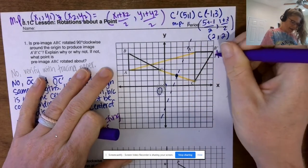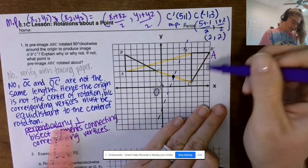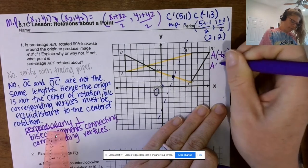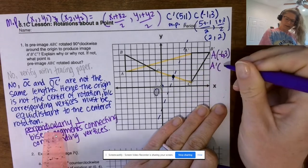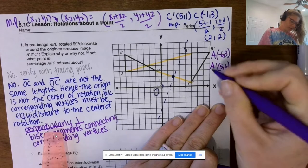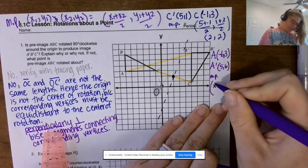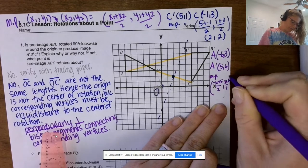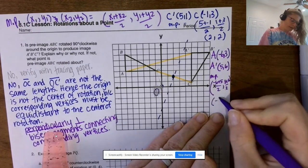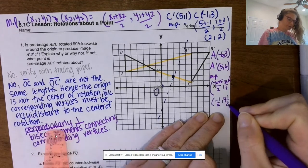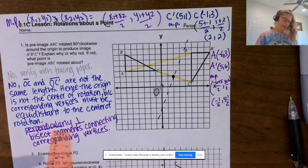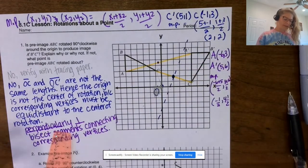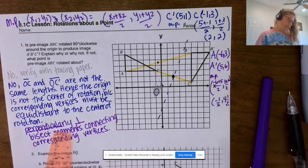A has coordinates (−6, 3) and A′ has coordinates (5, 6). The midpoint is ((−6 + 5)/2, (3 + 6)/2) = (−1/2, 4½). Since we get fractions, it's not as accurate to graph. I'll look at B and B′ instead, which I probably should have started with because it's a horizontal segment.